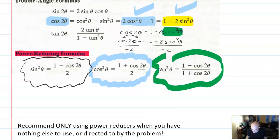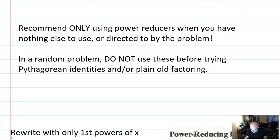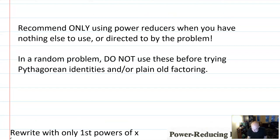But here is the big warning. Only use the power reducers when you have nothing else to use or you're directed to do so by the problem. Every time I teach students these power reducing formulas, they use them in every problem that they see a sine squared or a cosine squared. They say, oh my gosh, I've got to reduce that power. Guess what? It's never the right choice. You almost never want to use the power reducers.